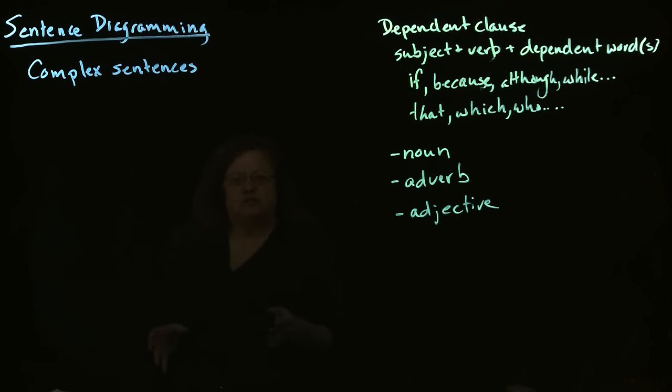When you're diagramming complex sentences, you're still showing whether one sentence or one clause is less important than the other. We saw just a moment ago how sometimes the dependent word can be part of the dependent clause. Sometimes it can be used as some other part of the sentence, such as the noun.